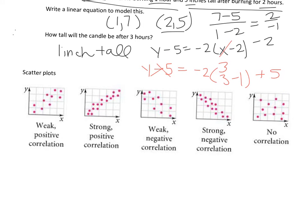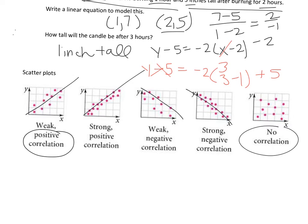On the next page we do scatter plots, going back to correlation discussed in Algebra 1. Positive correlation means if you model the data with a line, the dots go up from left to right. Negative correlation goes down from left to right. If you can't even draw a line, it's no correlation. You can also have weak or strong correlation — weak means the points are not clustered tightly on the line, while strong means the dots are clustered closely together.